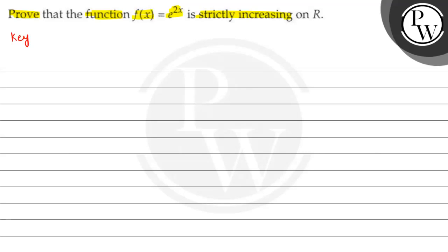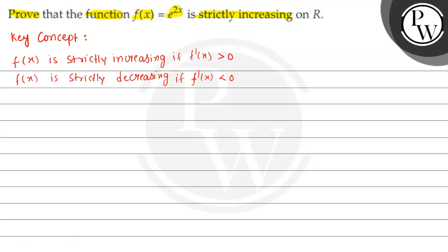The key concept to solve this question is: suppose we have a function f(x). f(x) is strictly increasing when the derivative is greater than 0. Similarly, function is strictly decreasing if the derivative of function is less than 0.